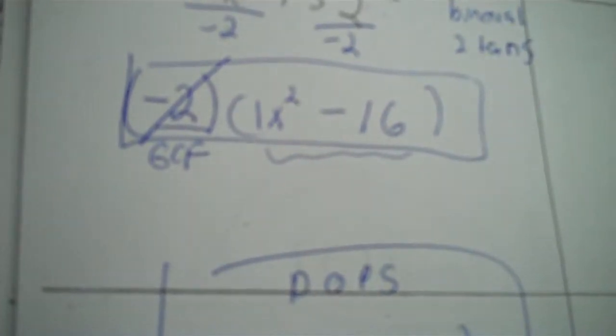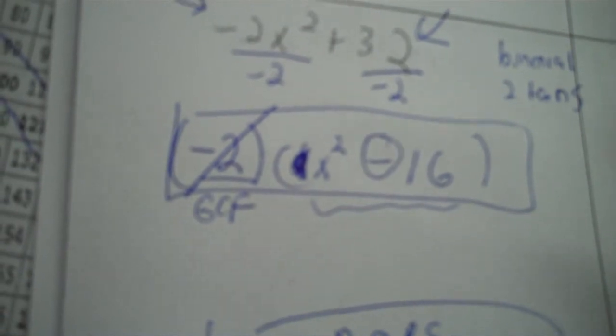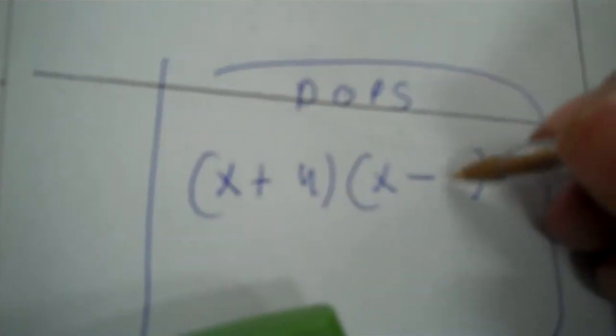Now we're looking at x squared minus 16 for the difference of perfect squares. We have the minus sign. The 1 in front of x squared can be deleted — a multiplier of 1 on a variable is unnecessary. x squared is a perfect square because you write it as x times x. Jump over the minus — 16 is 4 times 4. So x, x, 4, 4.